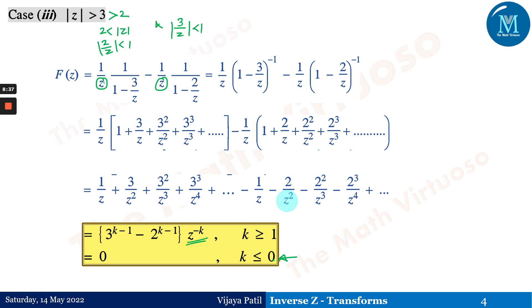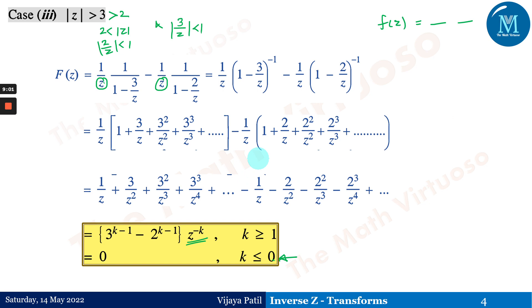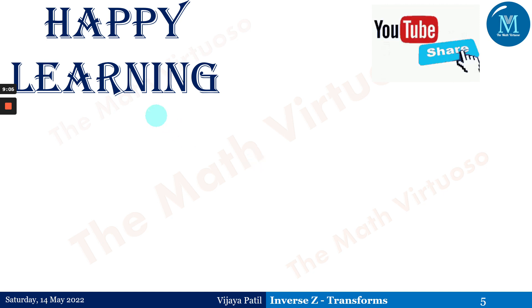I hope you have understood the partial fraction method — why it is called the partial fraction method: the given function is converted using partial fractions, separation is done, and then the method proceeds as discussed for this question. Please put your queries in the comment section. Thank you, happy learning.